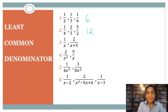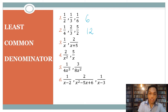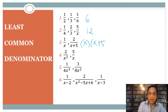For number three, we have two denominators, x and x plus five, where neither can divide the other. So in this case, we will use x times (x plus five) as our LCD.